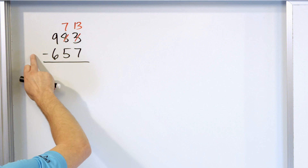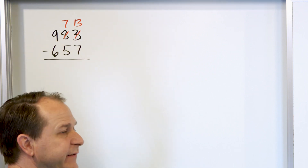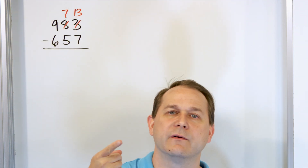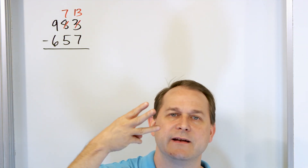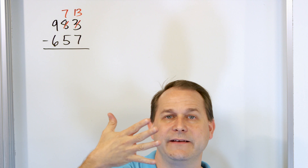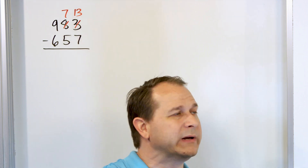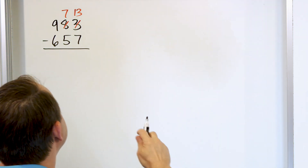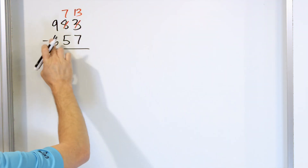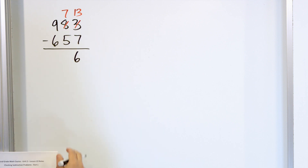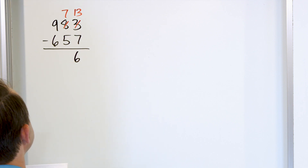So now 13 minus 7. We start with 13 and we go down: 12, 11, 10, 9, 8, 7, 6. We land on 6. So 13 minus 7 is actually 6, so we put a 6 right here.